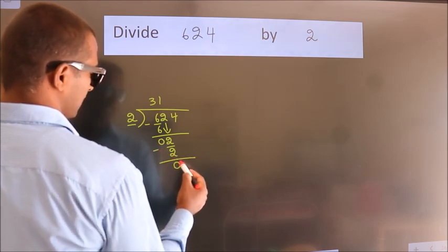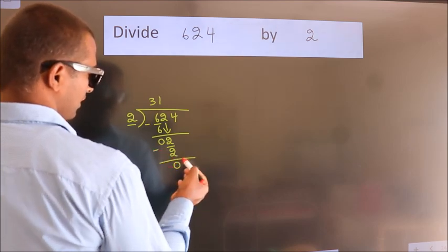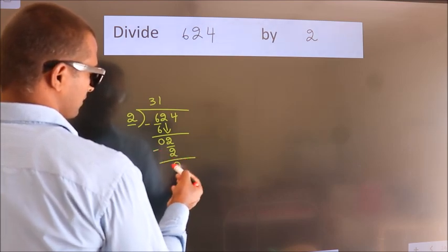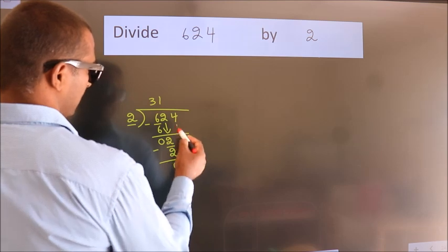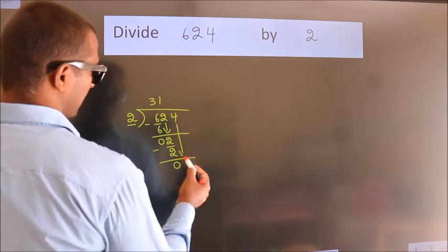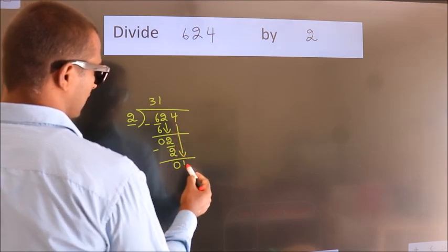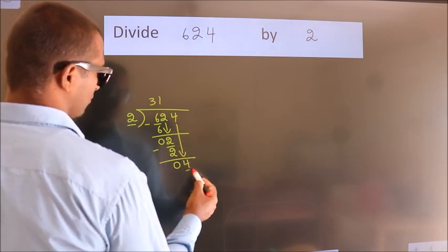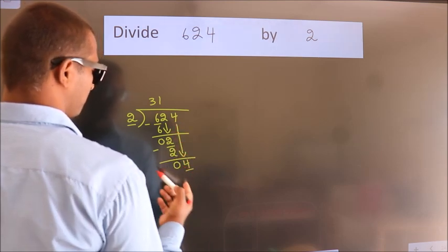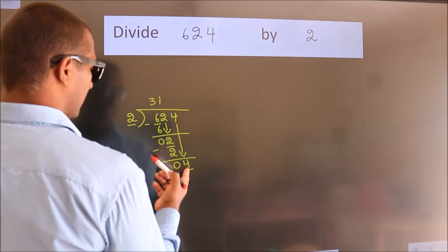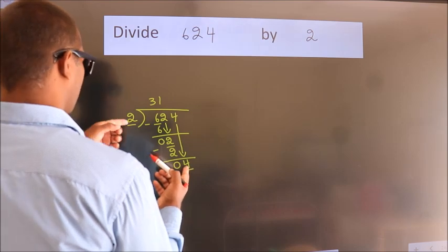So 2 is down. When do we get 2 in the 2 times table? 2 times 1 is 2. Now we subtract and get 0. After this, bring down the beside number, so bring down 4.